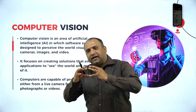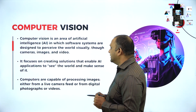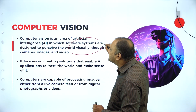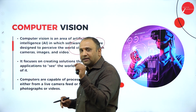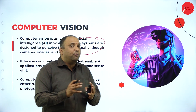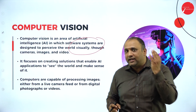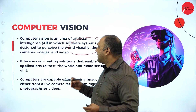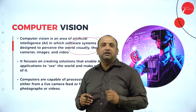Artificial intelligence is becoming a center theme for all of us. We also need to understand what computer vision is. This is an area of artificial intelligence in which software systems are designed to perceive the world visually through cameras, images, and videos. There cannot be something more interesting or fantastic where you are able to get into the visual experience.